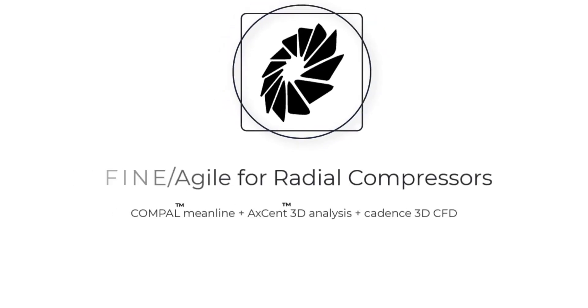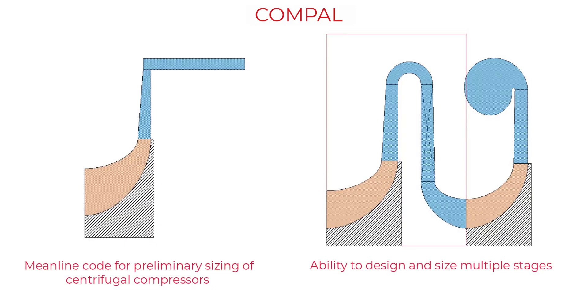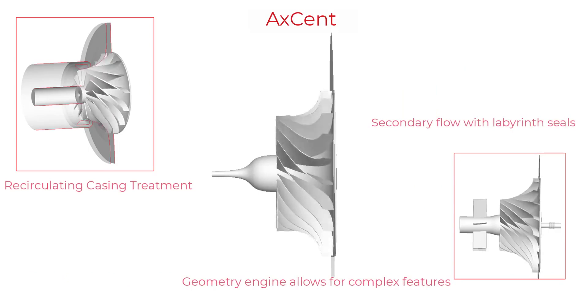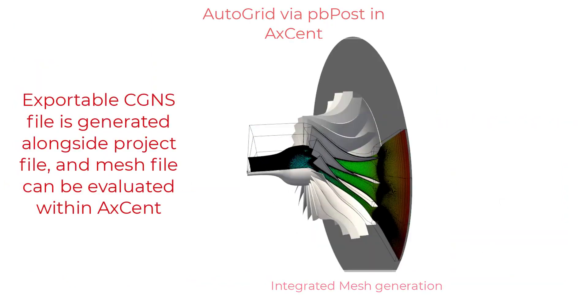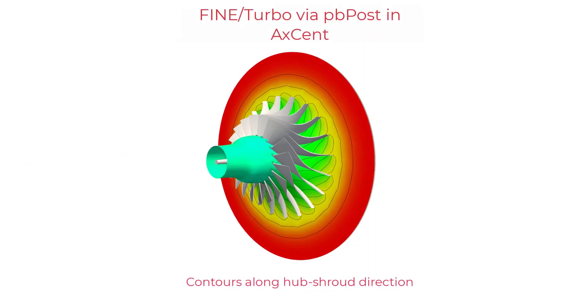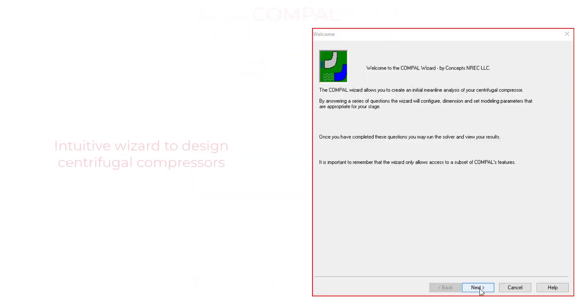Let's take a look at our solution for radial compressors. Starting with our 1D design and analysis tool, Compow, we'll move into 3D design with Accent, and then pre-processing and post-processing of our CFD solution using PDPOST.